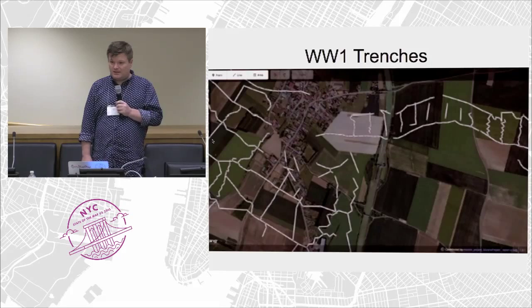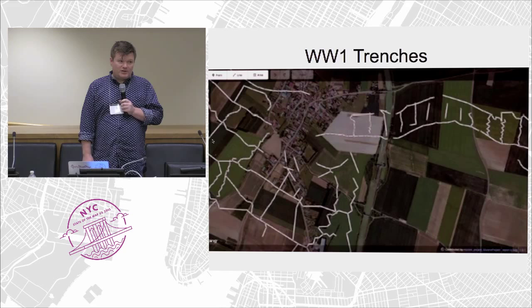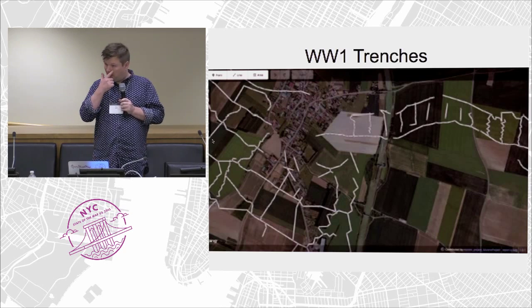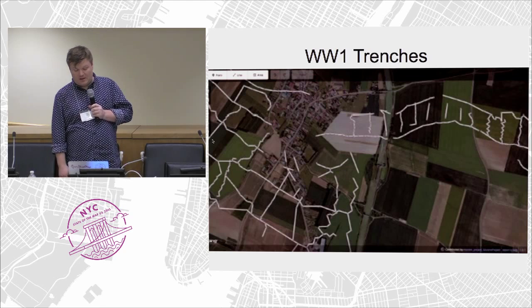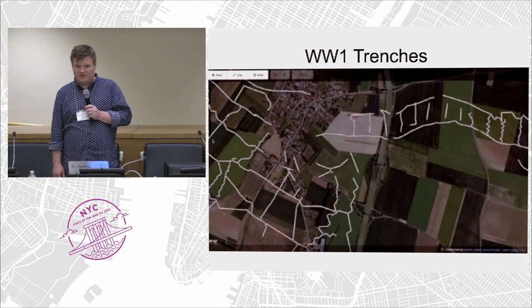Rob Warren is an academic researcher in Canada who is mapping the trenches from the Great War — World War I trenches — and also artillery locations in Europe. This is very timely with the anniversary of the First World War. You can see the lines as they've moved over time, with each line having a different attribute.